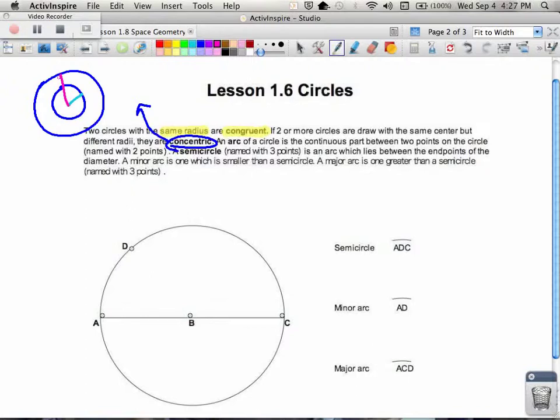An arc of a circle is a continuous part of the circle between two points, and it's named with these two points. So for example, if I were drawing another circle here off to the side...